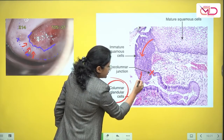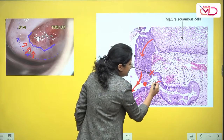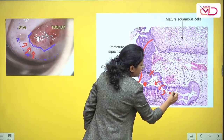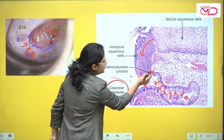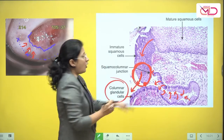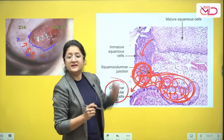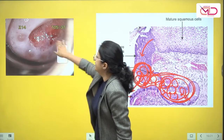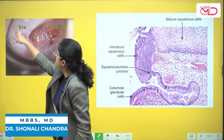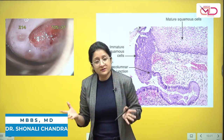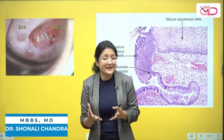Moreover, when the squamous epithelium regrows, the opening of this cleft can get blocked. So these columnar glandular cells continue to produce mucin, and that mucin gets collected inside and becomes visible outside on the ectocervix in the form of a Nabothian cyst. So the Nabothian cysts actually mark the periphery of the ectocervix where the old squamous columnar junction must have been. You realize that this is a completely physiological phenomenon.